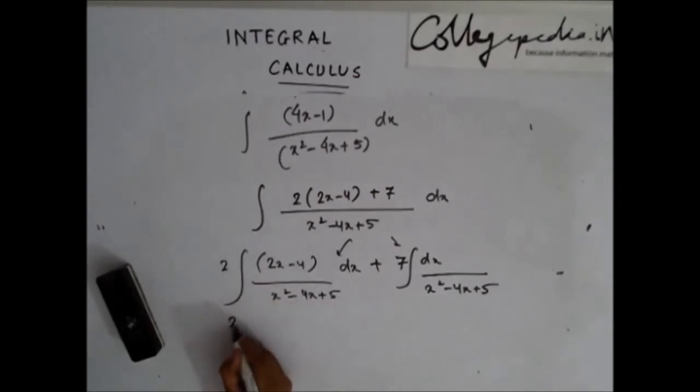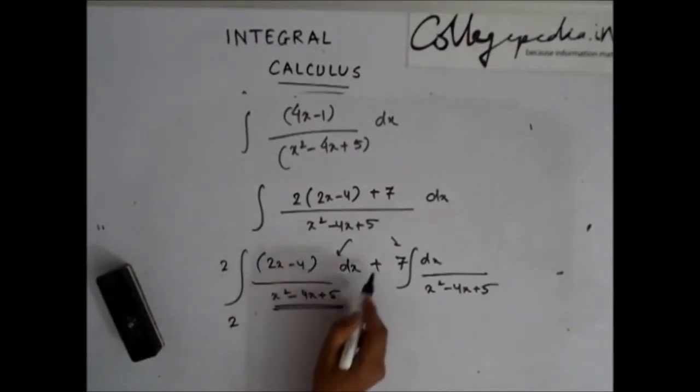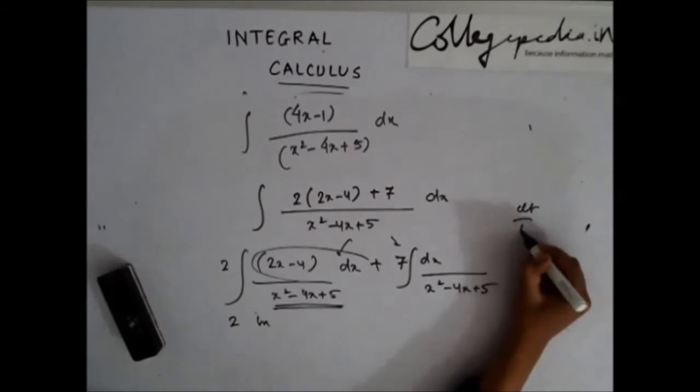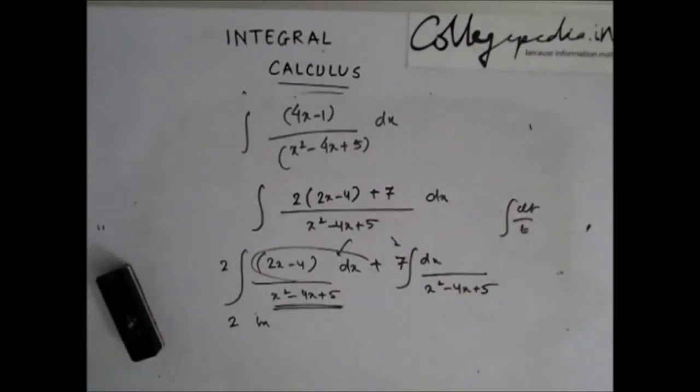And the first part is very easily integratable because if I take this as t, this is dt. So this becomes ln of t because dt by t integration is ln t. So this part becomes ln of x square minus 4x plus 5.